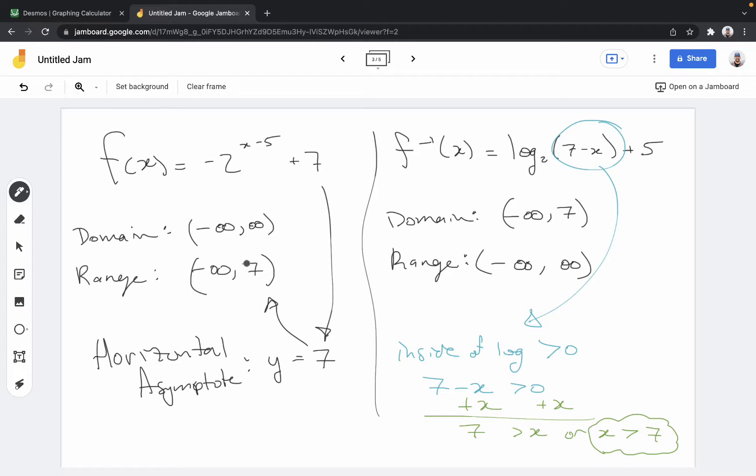So it's a y equals 7 horizontal asymptote. From there, that means the range is going to stop before 7. It's not going to include it. And because it's a negative, it's going to go down.